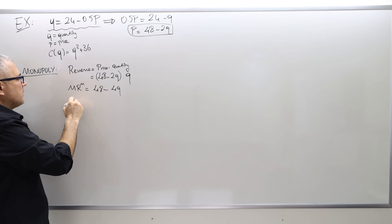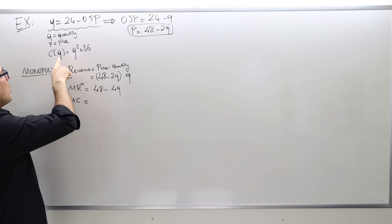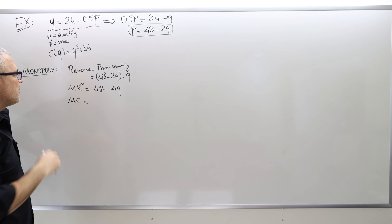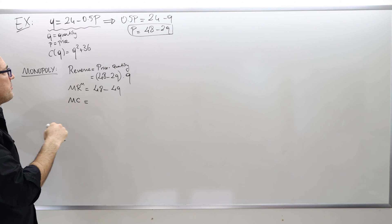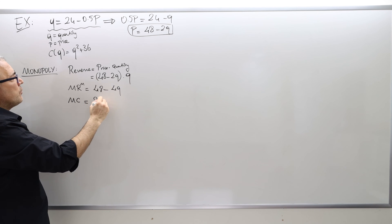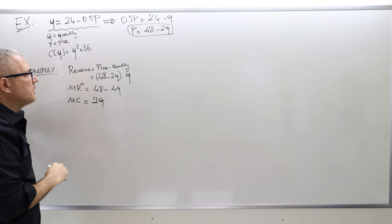What about the marginal cost? The cost function is Q squared plus 36, so its derivative with respect to Q is 2Q. The fixed cost term of 36 drops out, so marginal cost equals 2Q.